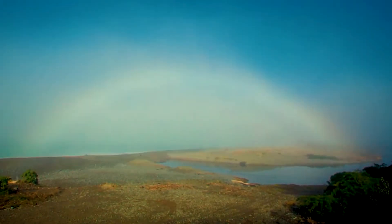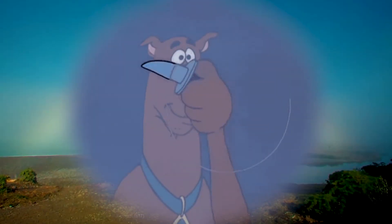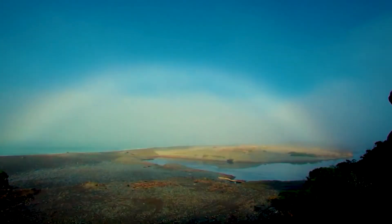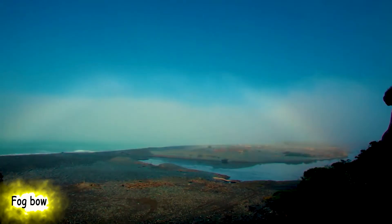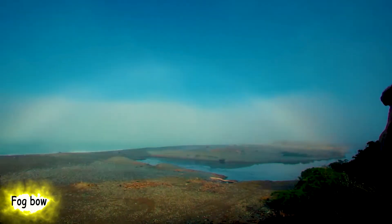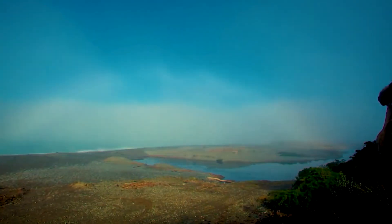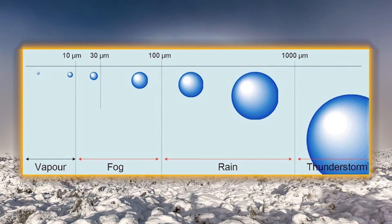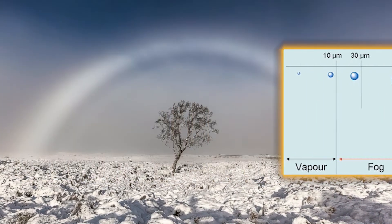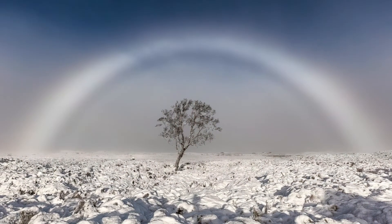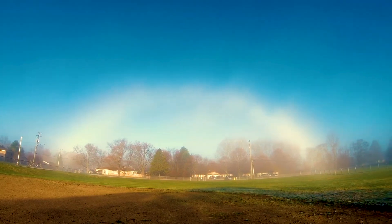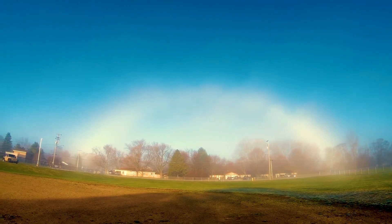Rainbows can also appear in fog conditions, and the phenomenon is known as a fogbow, sometimes called the white rainbow. Because of the very small size of water droplets that cause fog, the fogbow has only very weak colors, with a red outer edge and bluish inner edge.